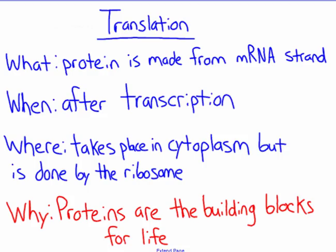So the important questions about translation are: what is translation? Translation is making proteins from an mRNA strand. When does it happen? It occurs after transcription. Where? In transcription, transcription took place in the nucleus. Now we are in the cytoplasm with translation, and this is done by the ribosomes. The ribosomes are the protein factories for the cell, and we need to make protein, so obviously we need some ribosomes.